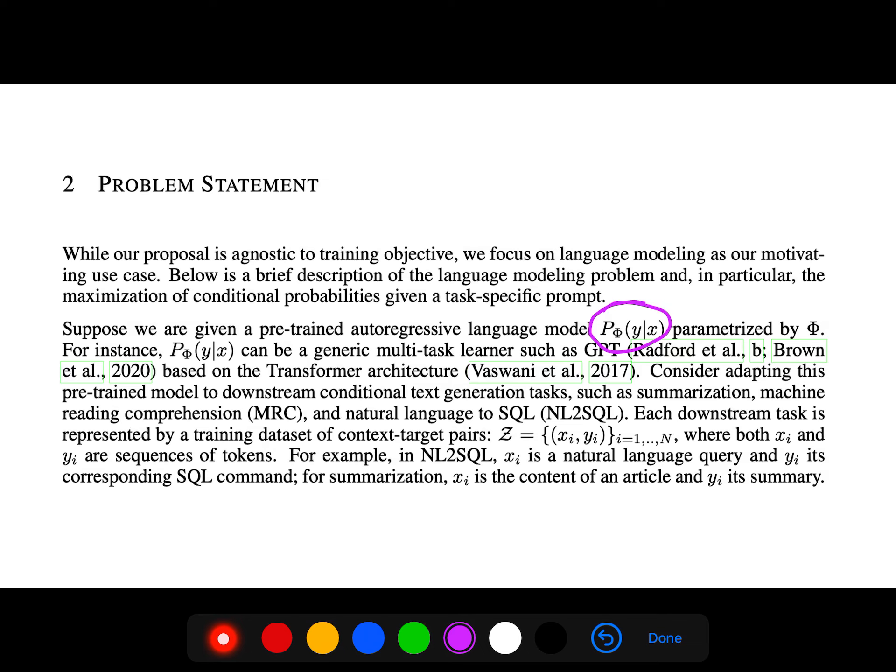Consider adapting this pre-trained model to downstream conditional text generation tasks, such as summarization, or machine reading comprehension, natural language, and natural language to SQL. Each downstream task is represented by a training data set of context-target pairs.